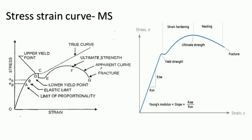The stress-strain curve shows how steel behaves under stress and strain, and also gives the value of Young's modulus as the slope of the curve. It has different stages: the first stage is up to the limit of proportionality, followed by strain hardening, then necking, and finally fracture.